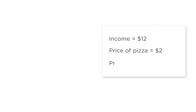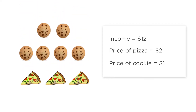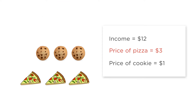For example, return to the world where you have a budget of $12, pizza costs $2 per slice, and cookies cost $1 each. You decided to buy three slices of pizza and six cookies. Now suppose the price of pizza goes up to $3. Suddenly your choices are more limited — you can no longer get three pizza slices and six cookies. If you want three slices of pizza, you can only get three cookies before your budget is gone. So you've been made effectively poorer; it's as if your income went down.